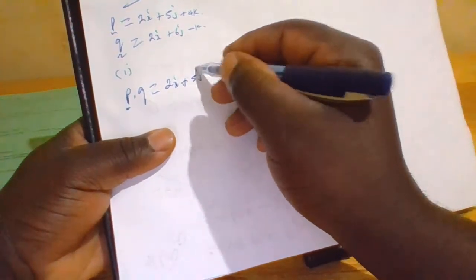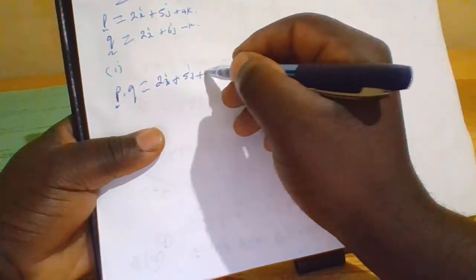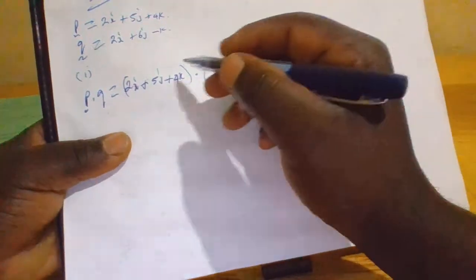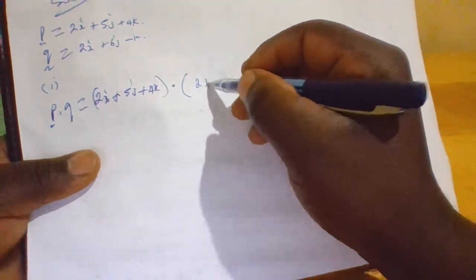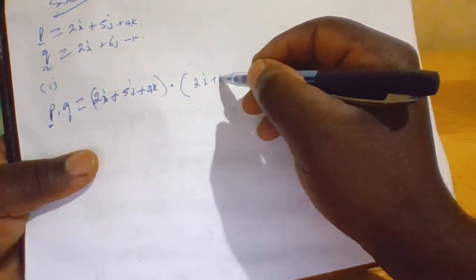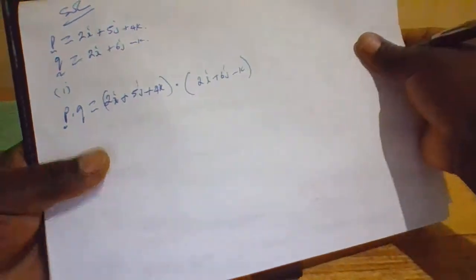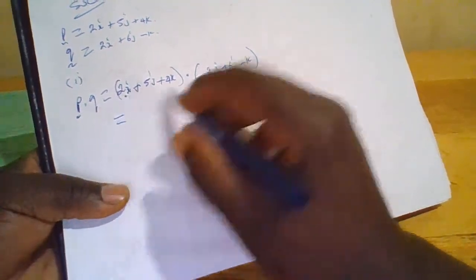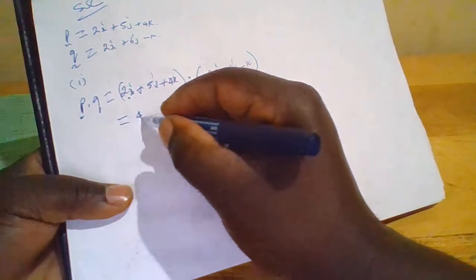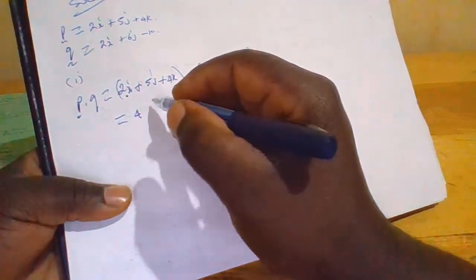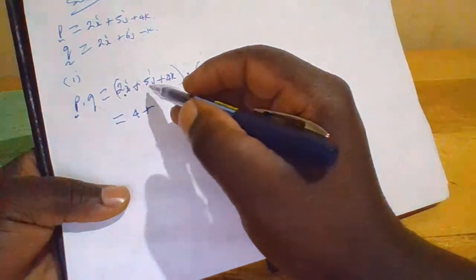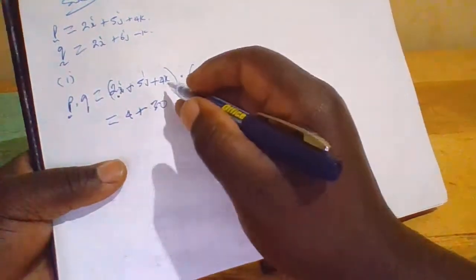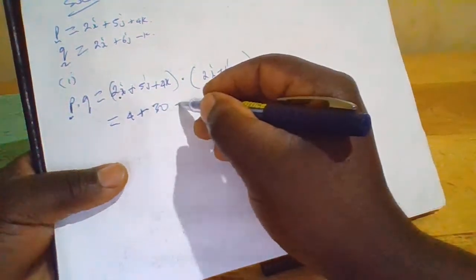When you take vector p dot vector q, this equals 2 plus 5 plus 4 dot 2 plus 6 minus k. This equals 2 times 2, we have 4, plus 5 times 6 we have 30, then 4 times negative 1 minus 4.